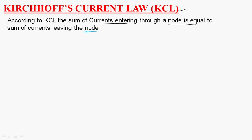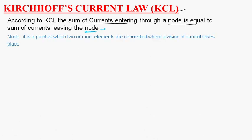What is a node? A node is a point at which two or more elements are connected, where division of currents takes place. A node is also called a junction.